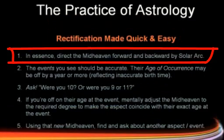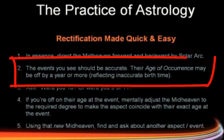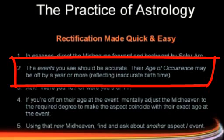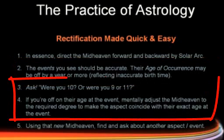In essence, what you are doing is directing the midheaven forward and backward by solar arc. The events that you see should be accurate. The age of occurrence may be off, which will reflect an inaccurate birth time.